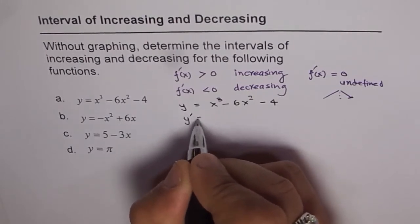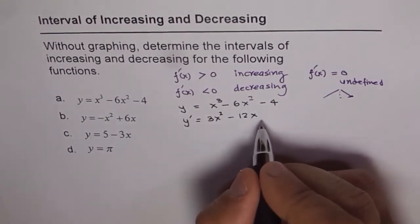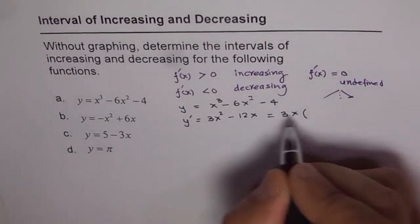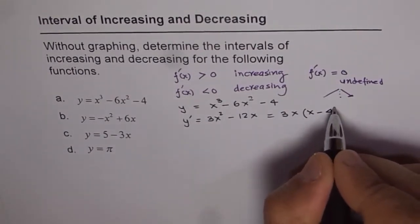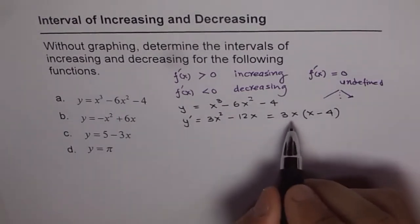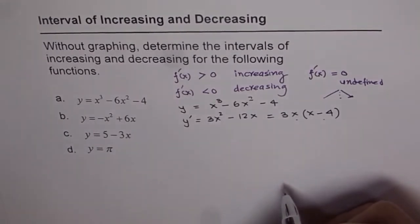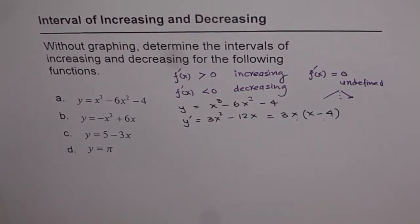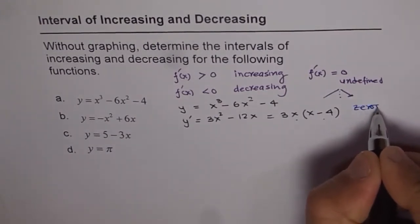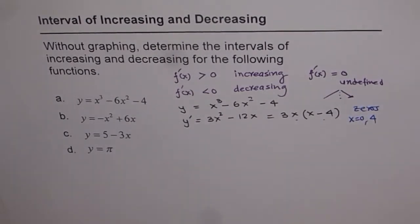So what is y'? y' is 3x squared minus 12x. Now you can factor this — you get 3x times x minus 4. So y' equals 3x times (x minus 4). This is 0 at x equals 0 and at x equals 4. So our zeros are at x equals 0 and x equals 4.